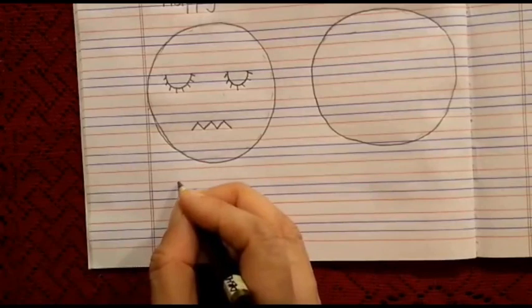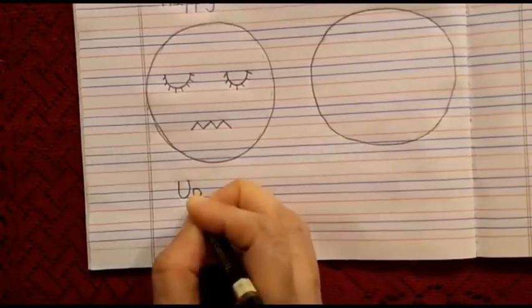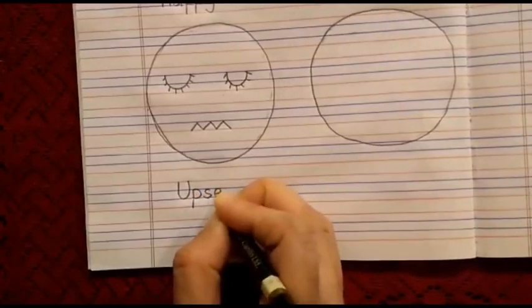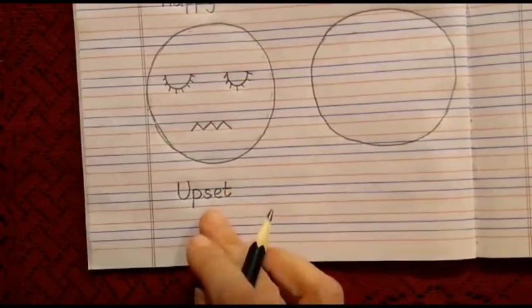So, let us write it. Capital U. Then, P. Then, S. Then, E. And then, T. Upset.